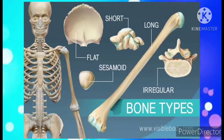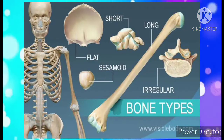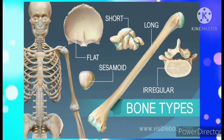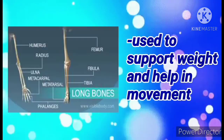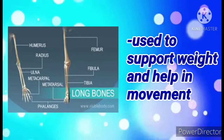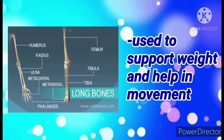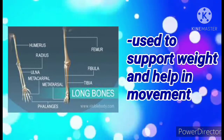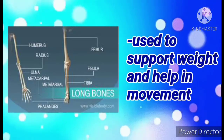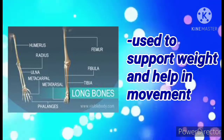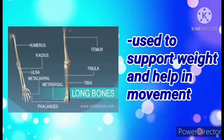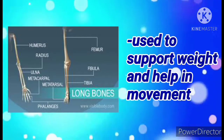There are five types of bones in our body based on their shape. First, we have the long bones. They are cylindrical and long, and they are used to support weight and movement of our body. Examples are the bones of the arms and the legs.